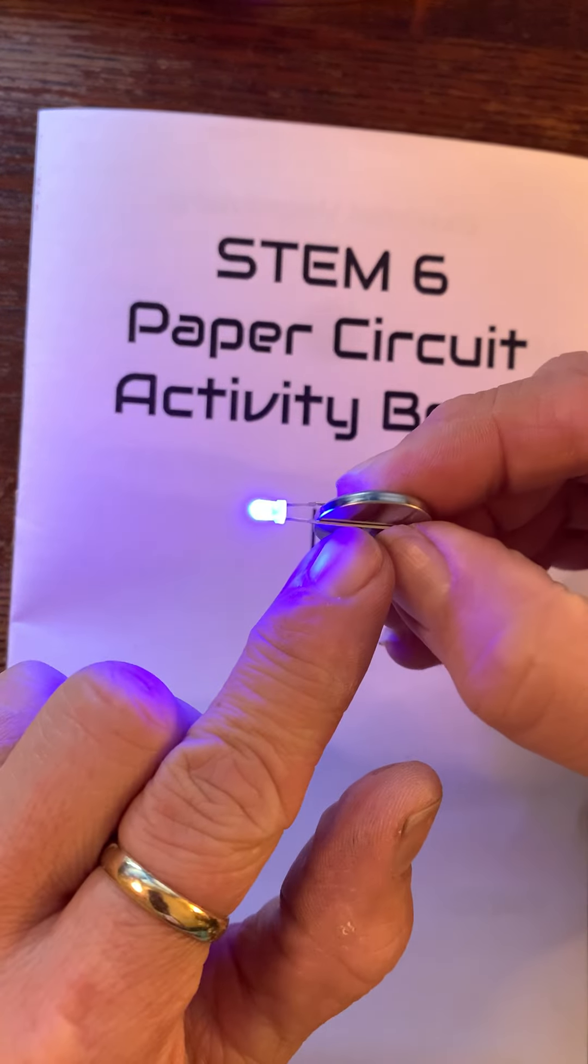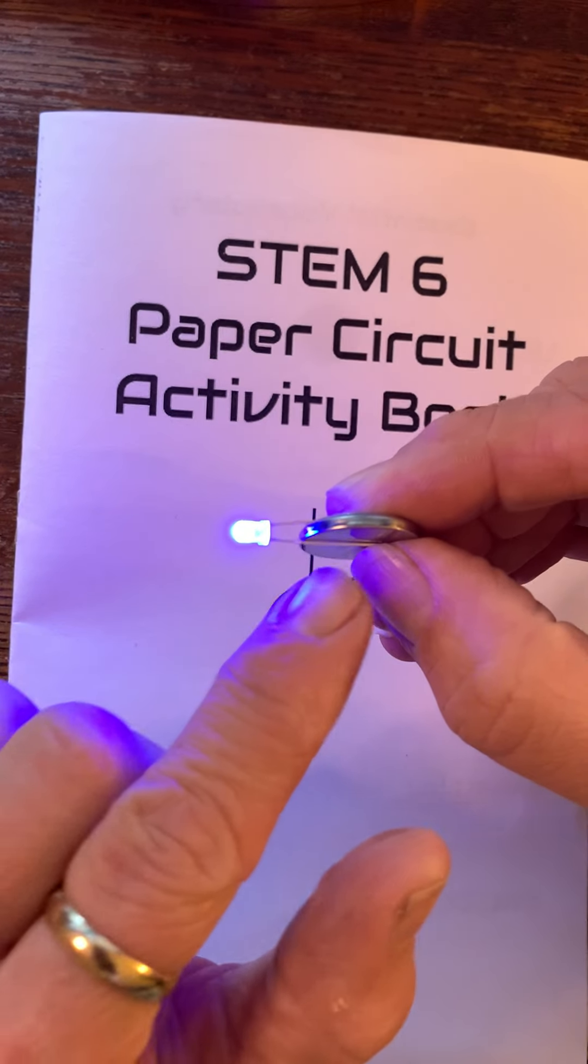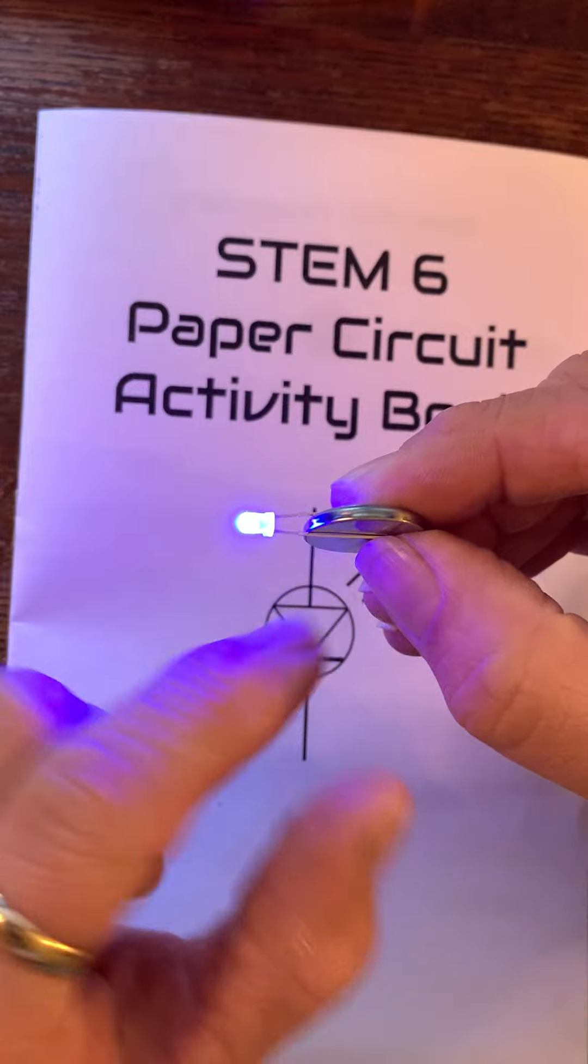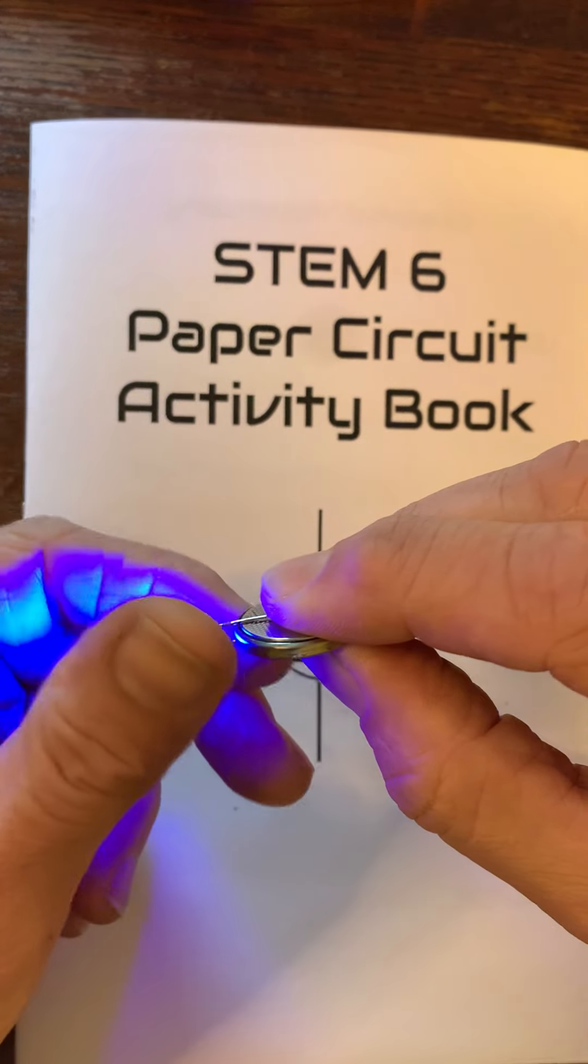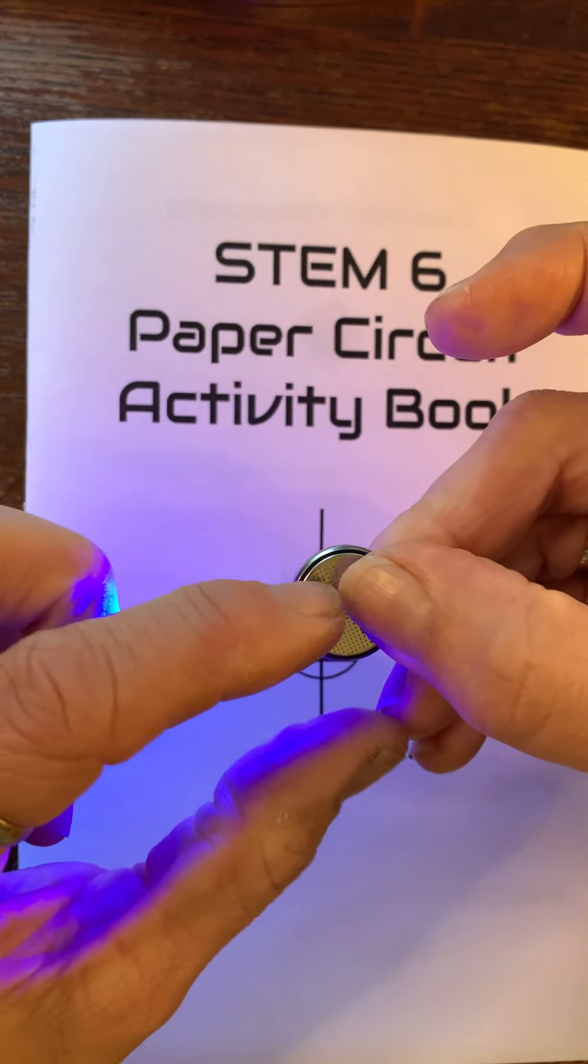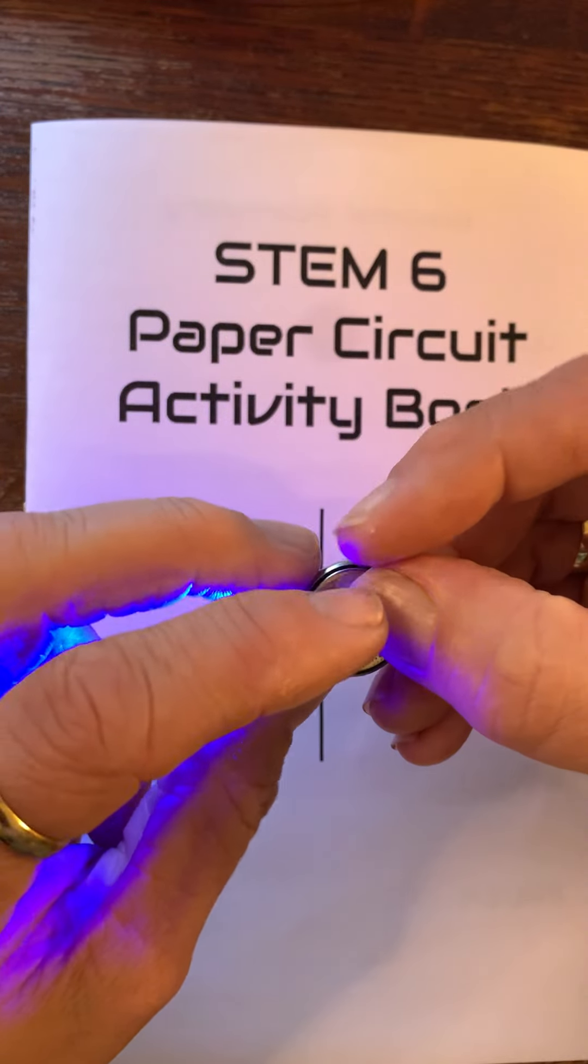The power is coming from the plus side of the battery which is the smooth side through the positive leg of the LED and then goes back through the negative leg of the LED to the negative side of the battery.